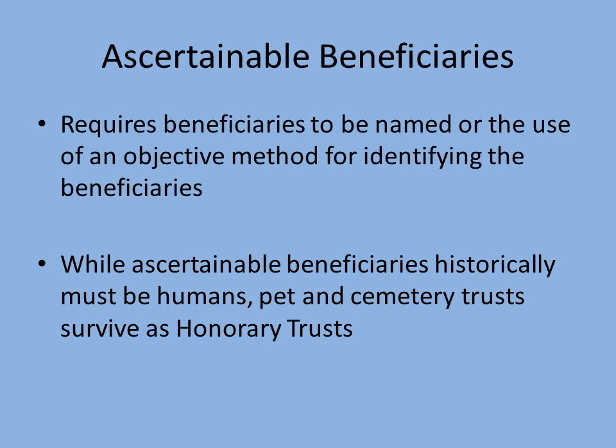The requirement of ascertainable beneficiaries: the easiest example is where you list specific names of people, or a class of people that's easy to determine — such as 'my issue,' 'my children' if children has been properly defined within the trust, or 'my siblings.' That's the easy case.